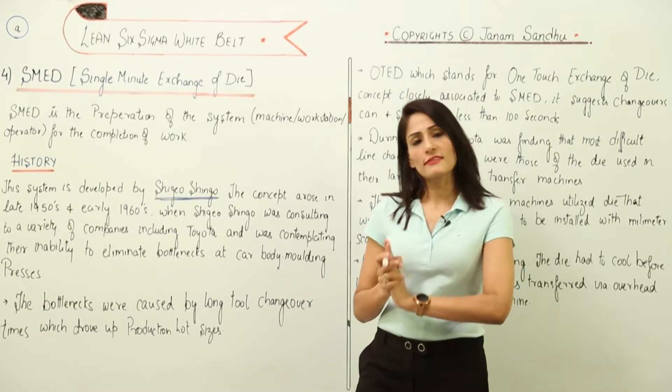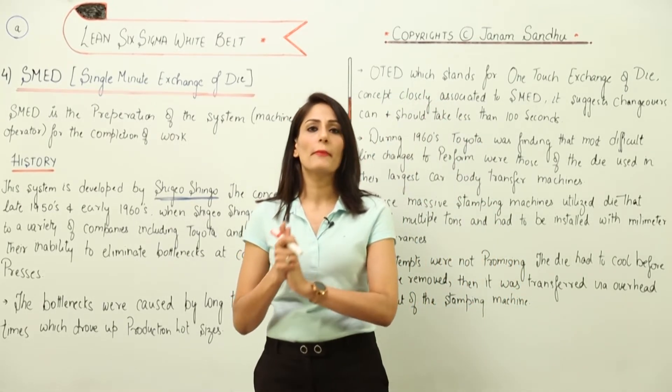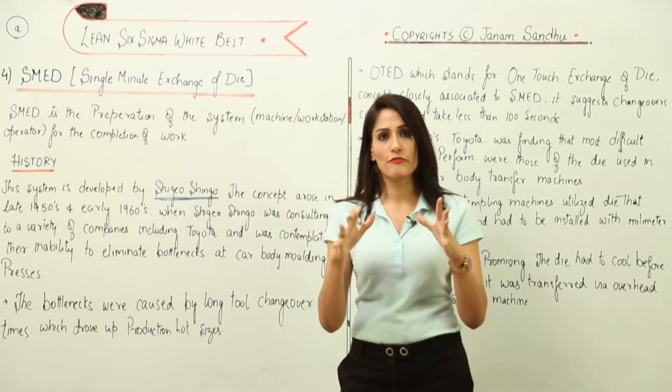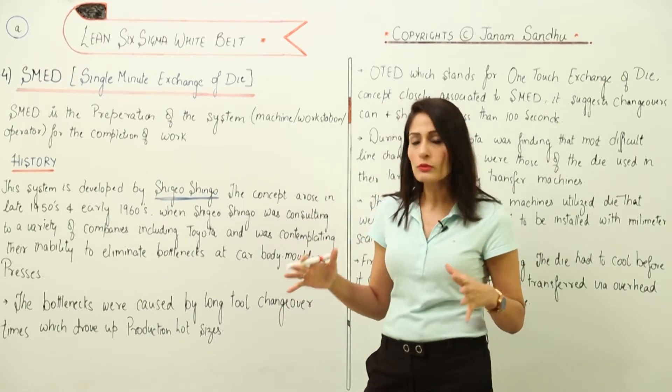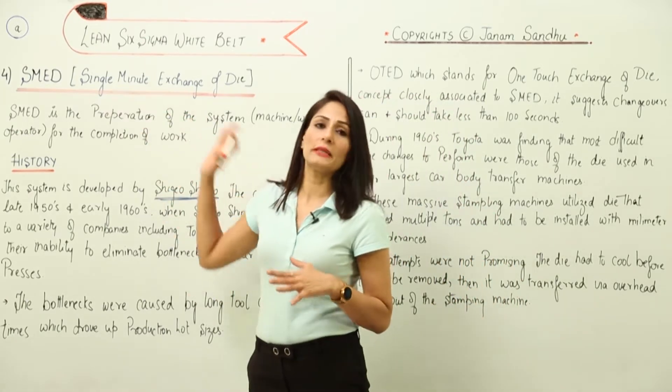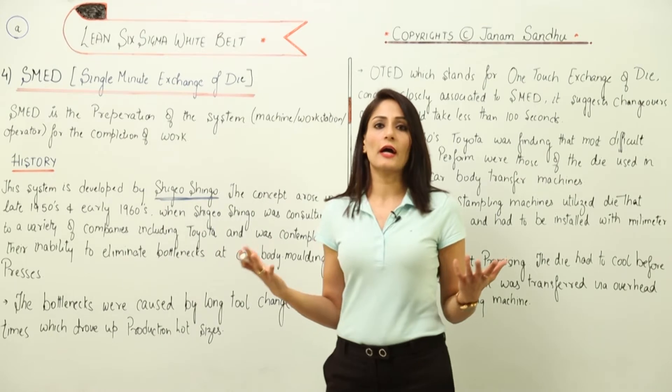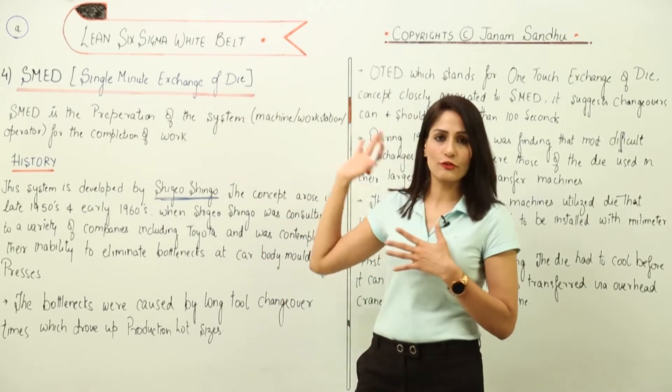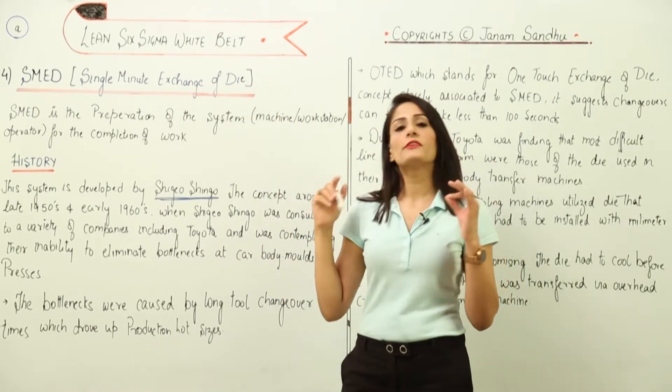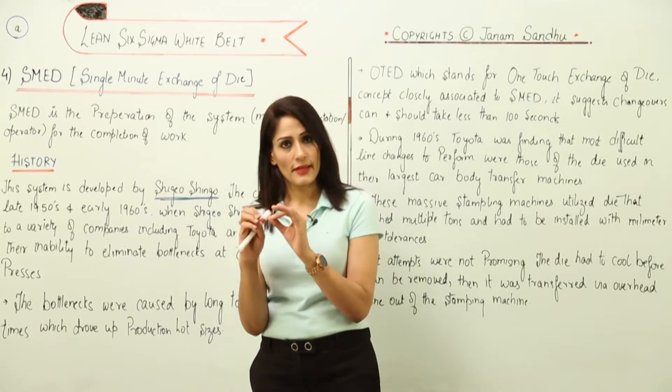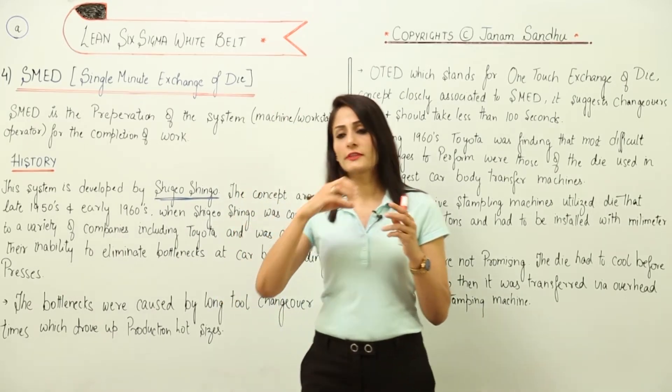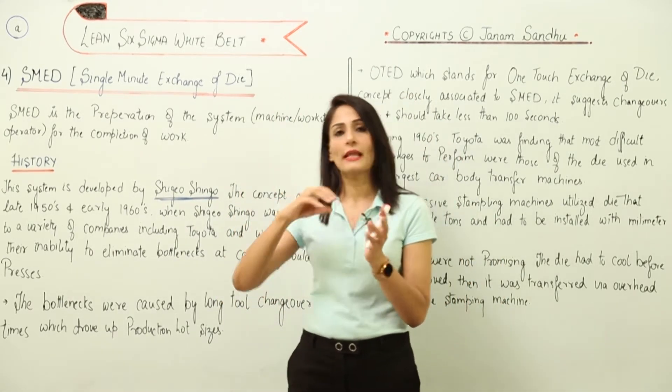Now in this lecture I would be covering a very important lean manufacturing concept or tool, the name of which is SMED. If I have to elaborate, it's Single Minute Exchange of Die. This is a very important concept using which the total production time, the tact time, can be decreased.